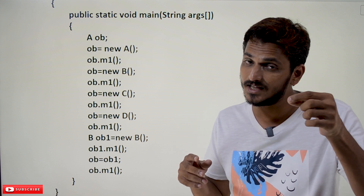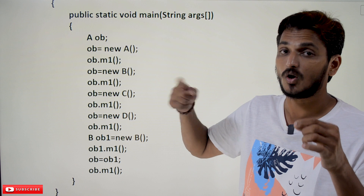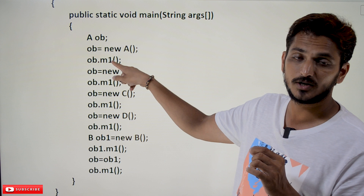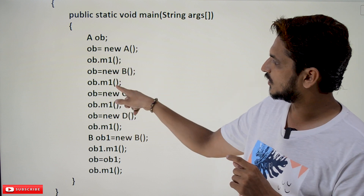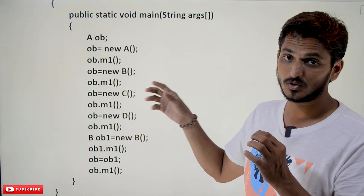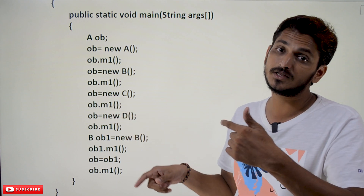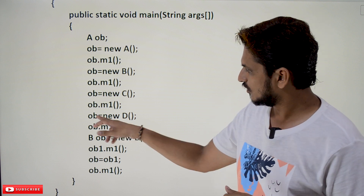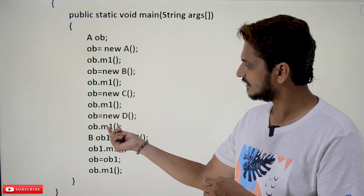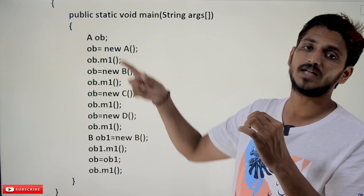OB is one entity that uses different logic at different times — we call this polymorphism. Here OB points to M1 in class A, then to M1 in class B. OB = new C() means OB references a class C object, and OB.M1() calls M1 from class C. OB = new D() creates a class D object, and OB.M1() calls M1 from class D.